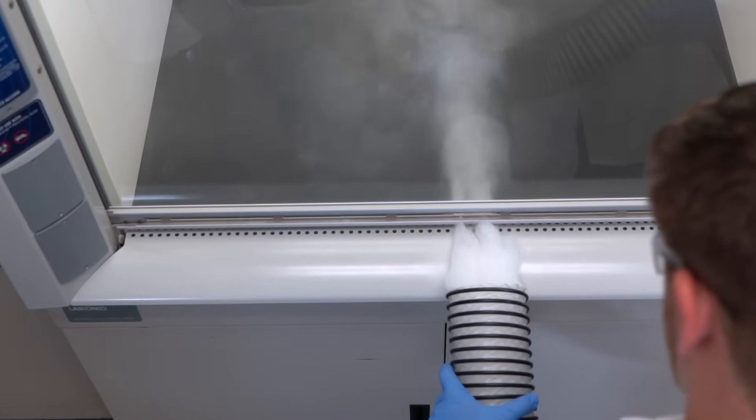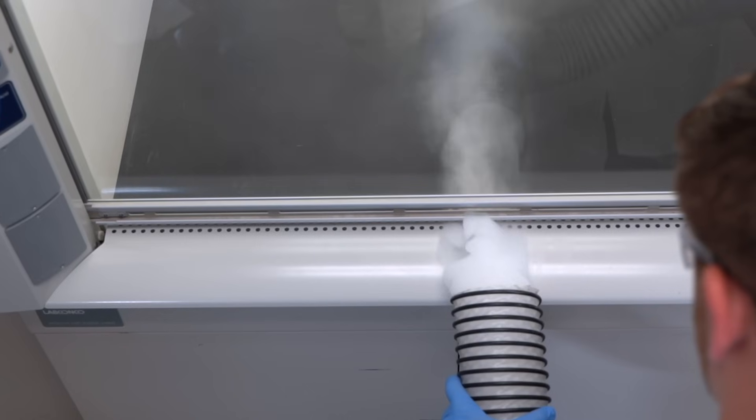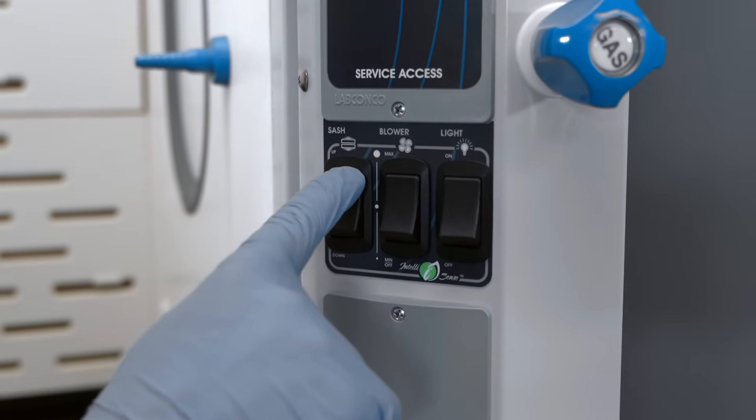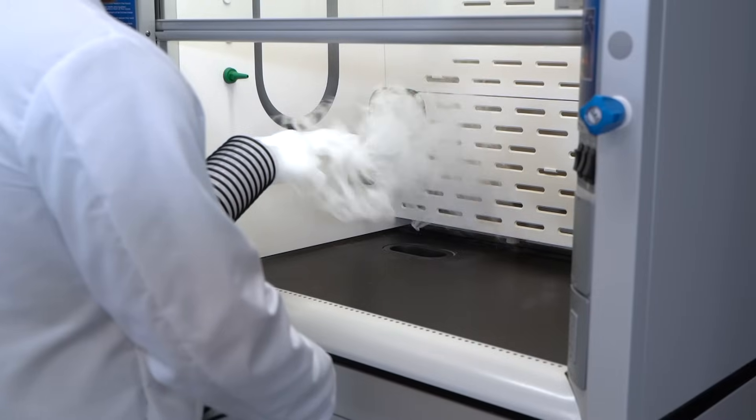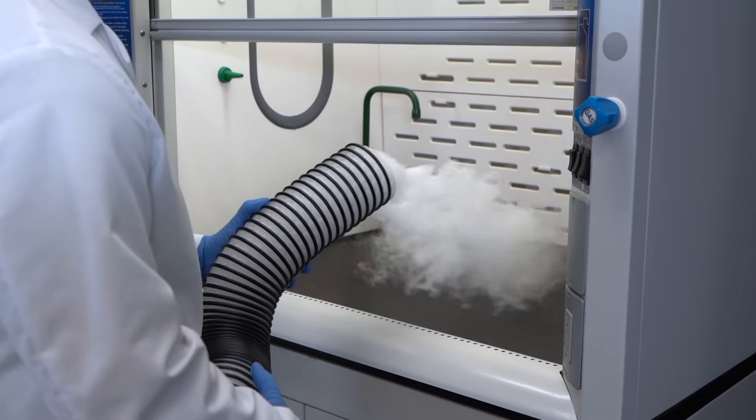Smoke can be used to visually verify a hood's containment ability. With the sash in the fully open position, smoke should be exhausted evenly from all areas of the hood.